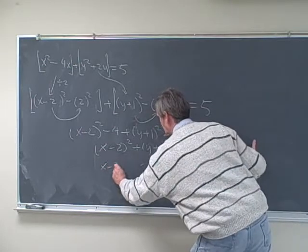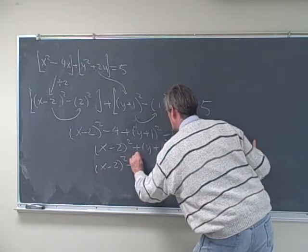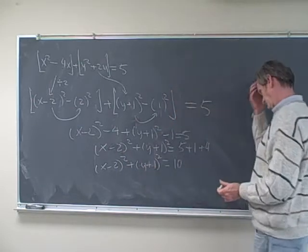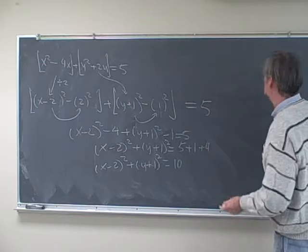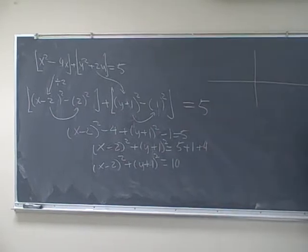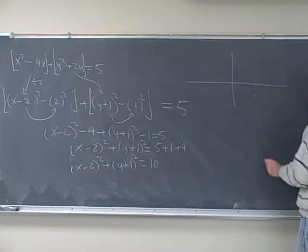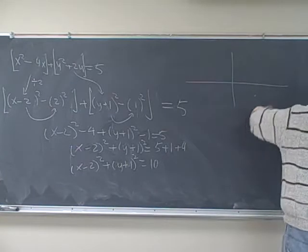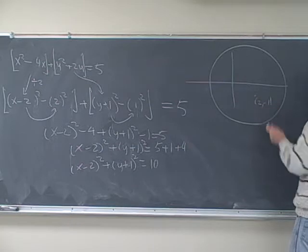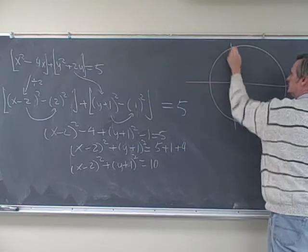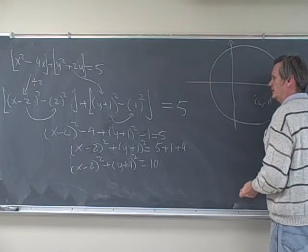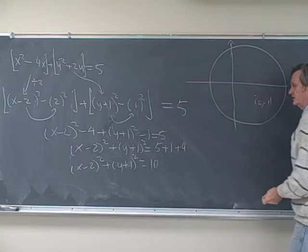So we have a circle of radius square root of 10 centered at the point (2, negative 1). We go over 2, negative 1 — a circle of radius square root of 10 centered at that point. As before, we can compute the intercepts, but we'll stop here for that one and return to the other two circles.